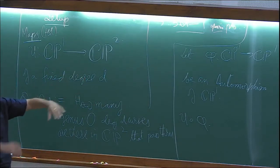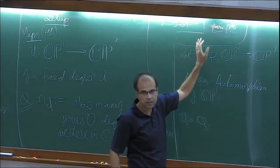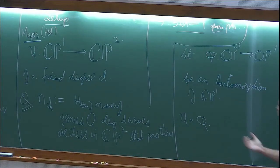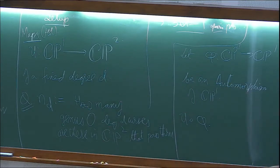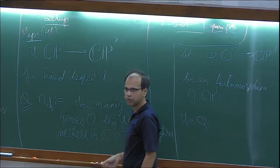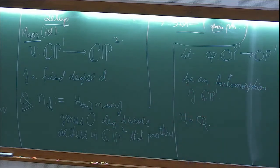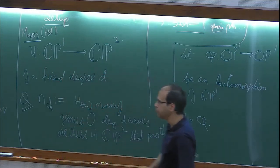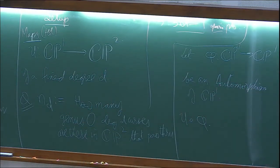Now I'll give a heuristic justification why the dimension of this space of genus 0 degree D curves is 3D minus 1 dimensional. What is a way to write a holomorphic degree D map from CP1 to CP2? You can show that any holomorphic degree D map takes an element of CP1 to three homogeneous degree D polynomials in two variables such that they never simultaneously vanish.